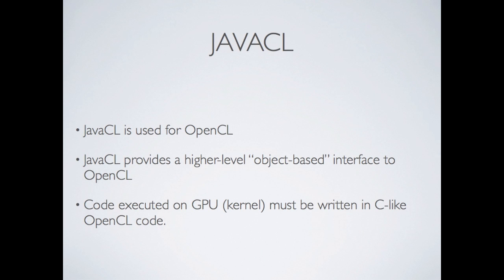JavaCL is another approach altogether. JavaCL is used for OpenCL and provides a higher-level object-based interface. Code executed on the GPU still must be written in the C-like OpenCL code. JavaCL alleviates you from dealing with many low-level intricacies of the OpenCL API by making it object-oriented. However, you can't necessarily go right to the OpenCL documentation and see function names and know exactly how they relate to JavaCL.